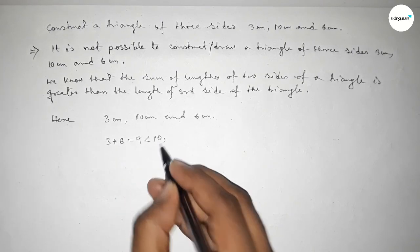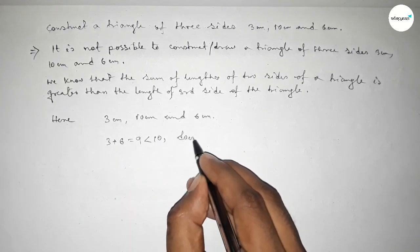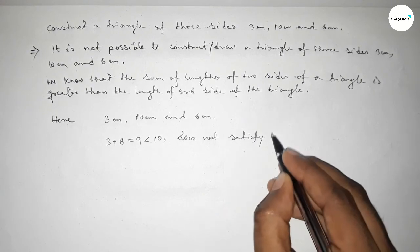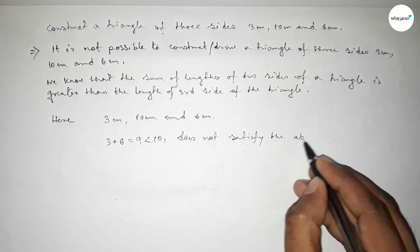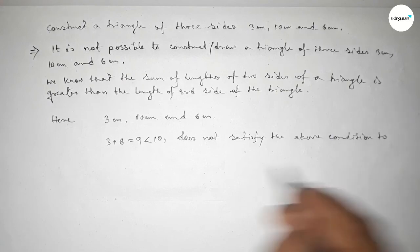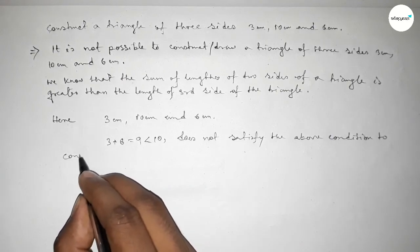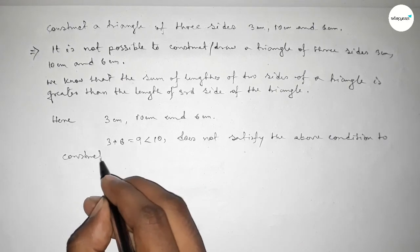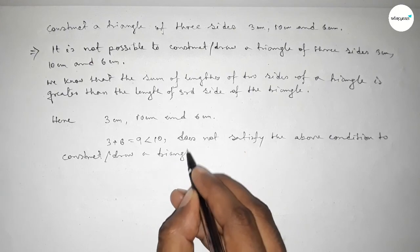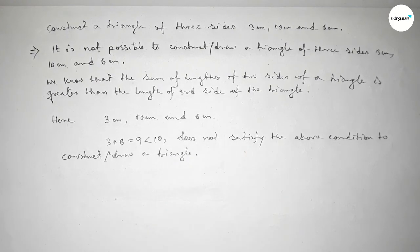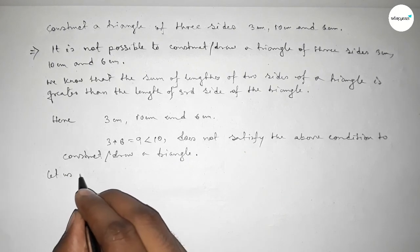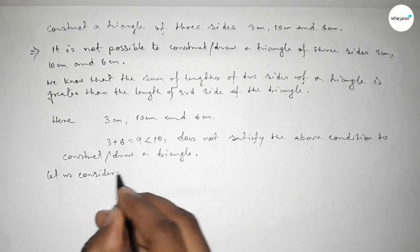Adding 3 and 6: 3 plus 6 equals 9, which is less than 10. So it does not satisfy the condition to construct or draw a triangle with these three sides. Therefore, we cannot construct this triangle.